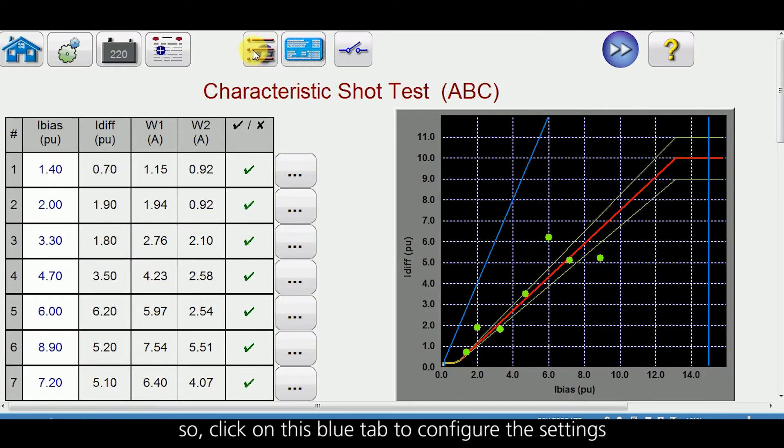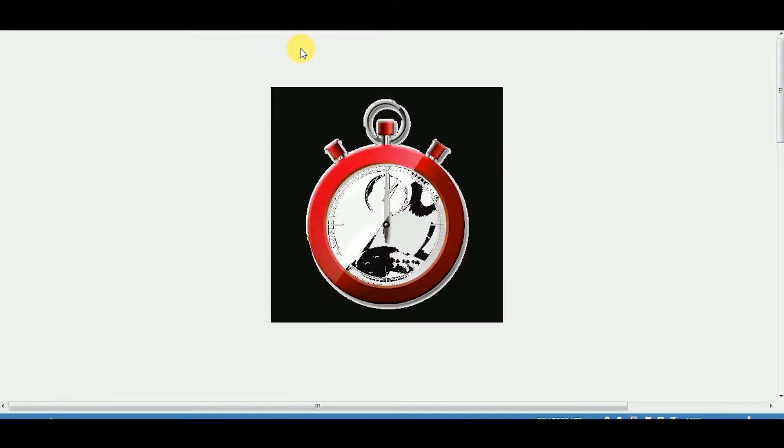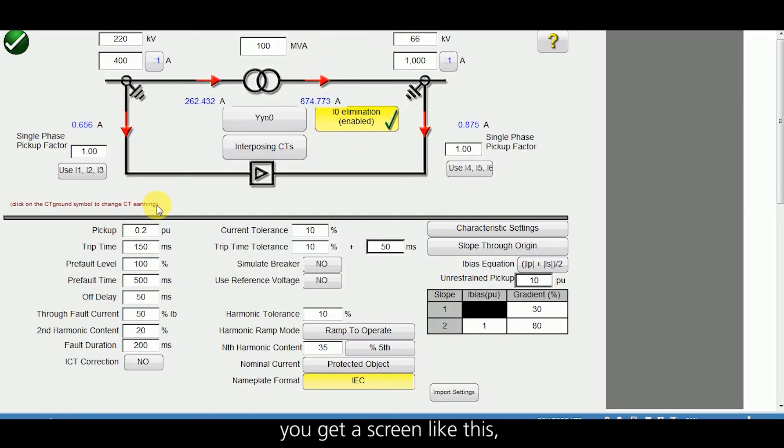Now click on this blue tab to configure the settings. Once you click on the blue tab you get a screen like this. Here we need to enter the values to match the relay settings.